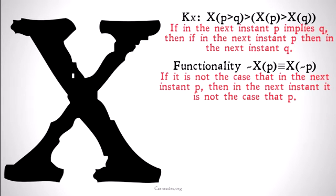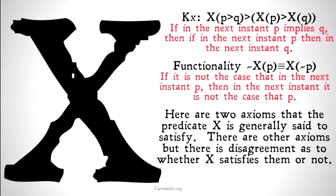Here are a couple of axioms. KX: if in the next instant P implies Q, then if in the next instant P, then in the next instant Q. And functionality: if it is not the case that in the next instant P, then in the next instant it is not the case that P. These are two axioms that the operator X is generally said to satisfy.